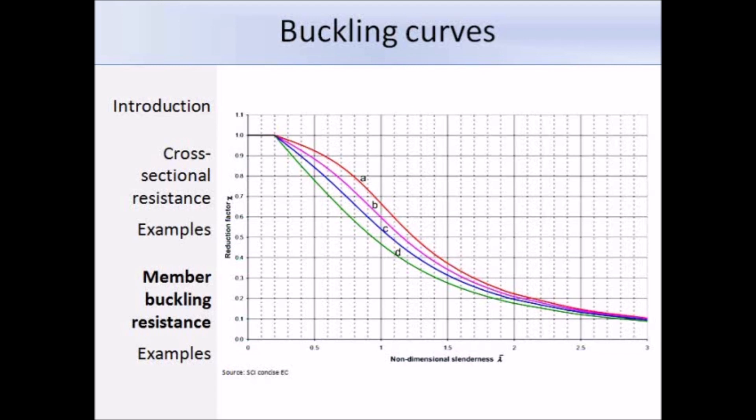The shapes of the curves are altered through the imperfection factor alpha. It can be seen that for values of lambda bar less than 0.2, the buckling factor is equal to 1. This means that for compression members of stocky proportions, there is no need to reduce the cross-section resistance. If we don't like the calculation, once we have calculated lambda bar, we can just use figure 6.4 to get chi instead of doing the calculation.